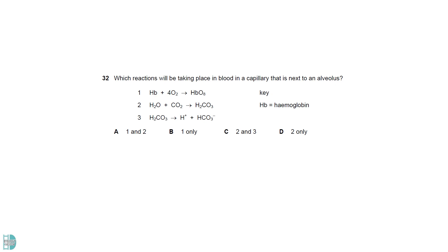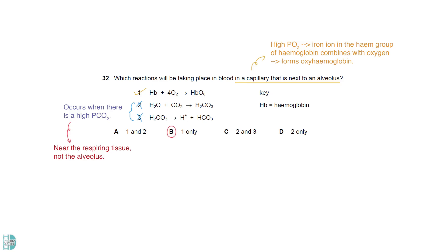When there is a high partial pressure of oxygen, the iron ion in the heme group of hemoglobin combines with oxygen, forming oxyhemoglobin. 2 and 3 show what happens when there is a high partial pressure of carbon dioxide. These events occur near the respiring tissue, not in the alveolus.